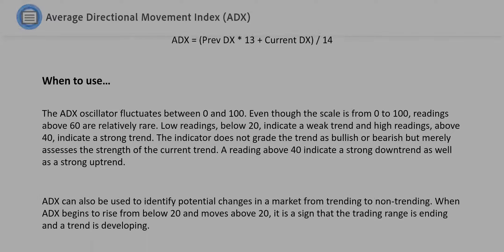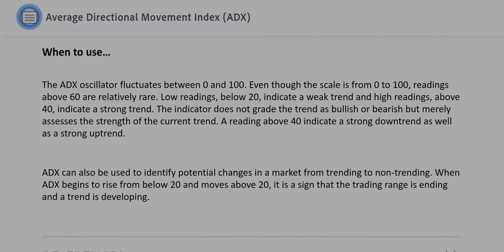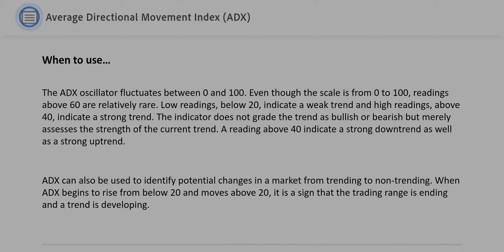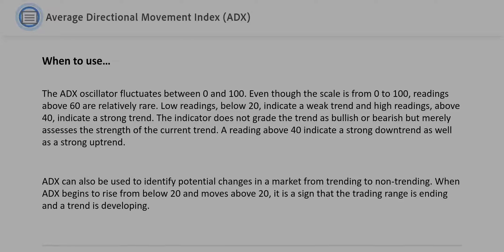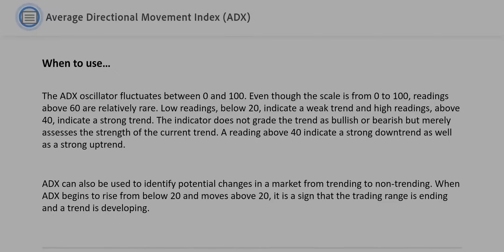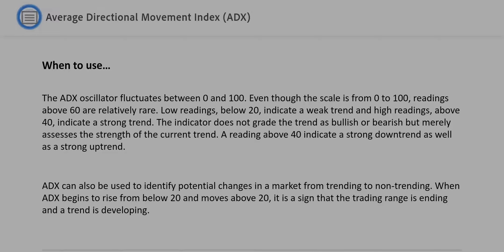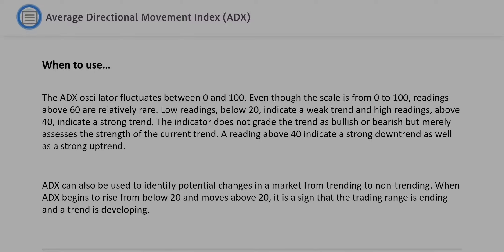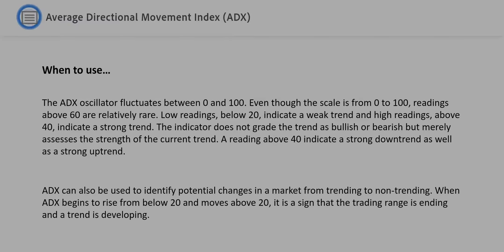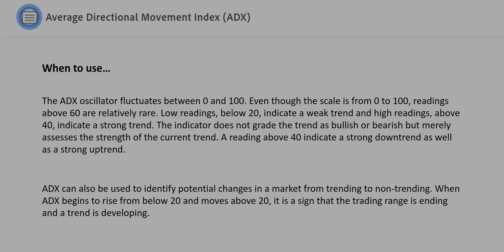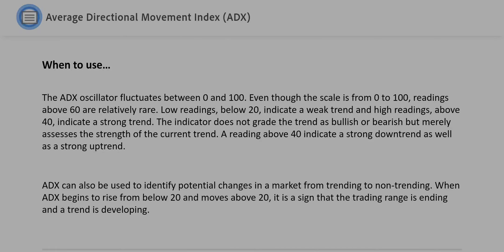When to use: The ADX oscillator fluctuates between 0 and 100. Even though the scale is from 0 to 100, readings above 60 are relatively rare. Low readings below 20 indicate a weak trend, and high readings above 40 indicate a strong trend. The indicator does not grade the trend as bullish or bearish but merely assesses the strength of the current trend. A reading above 40 indicates a strong downtrend as well as a strong uptrend. ADX can also be used to identify potential changes in a market from trending to non-trending. When ADX begins to rise from below 20 and moves above 20, it is a sign that the trading range is ending and a trend is developing.